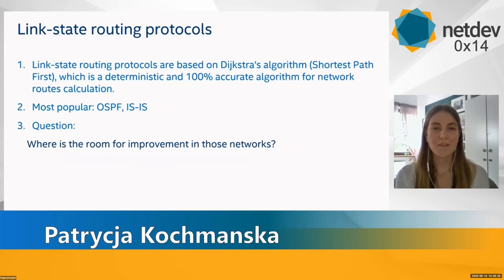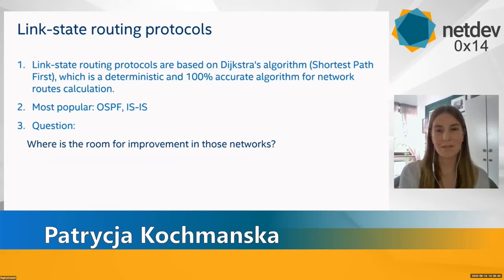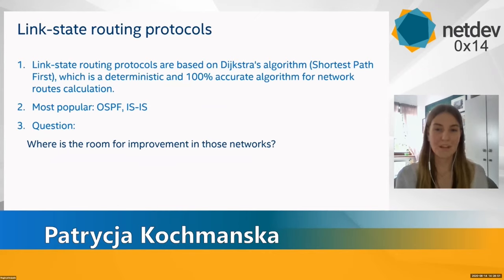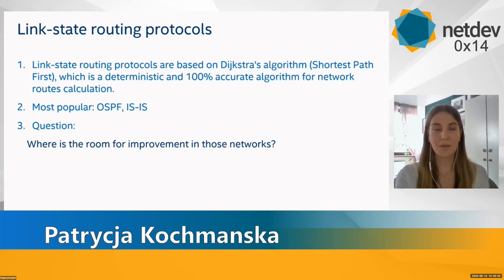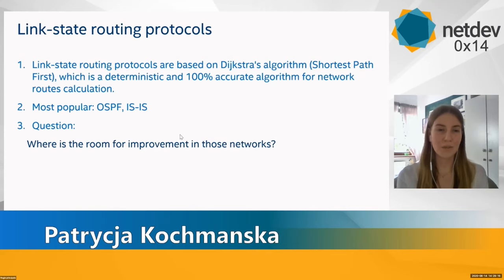Modern routing protocols take various approaches to select paths for packets in the most effective way. There are two main classes: distance vector routing protocols, in which routers have no information about the whole network topology and base routing decisions only on data about costs from nearest neighbors; and link state routing protocols, where each network node creates and stores its own scheme of the whole network topology and independently calculates the least cost path to every other node. The topology scheme may be considered as a graph, and paths are calculated based on Dijkstra's algorithm, which finds the shortest path between two graph nodes by adding up the cost of links. The most popular examples of link state routing protocols are OSPF and ISIS.